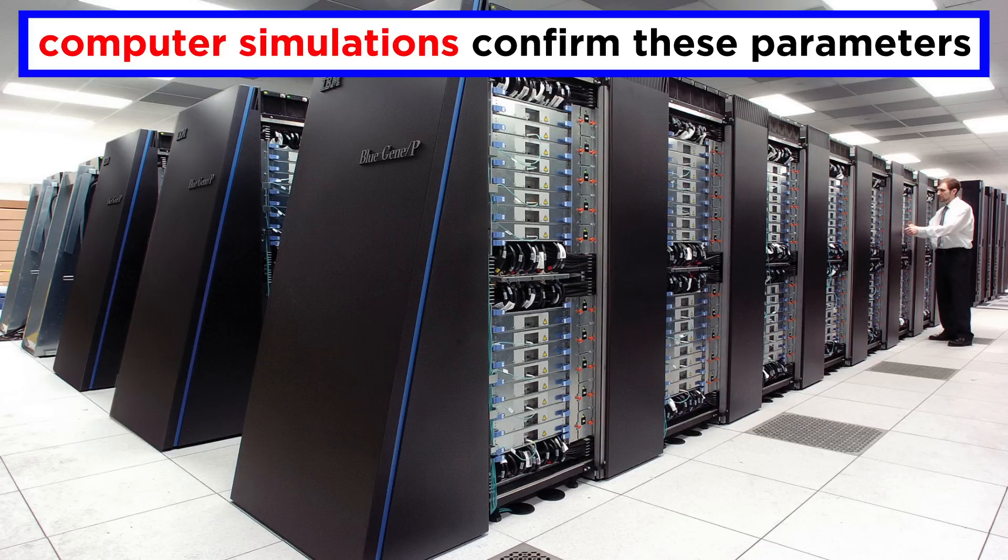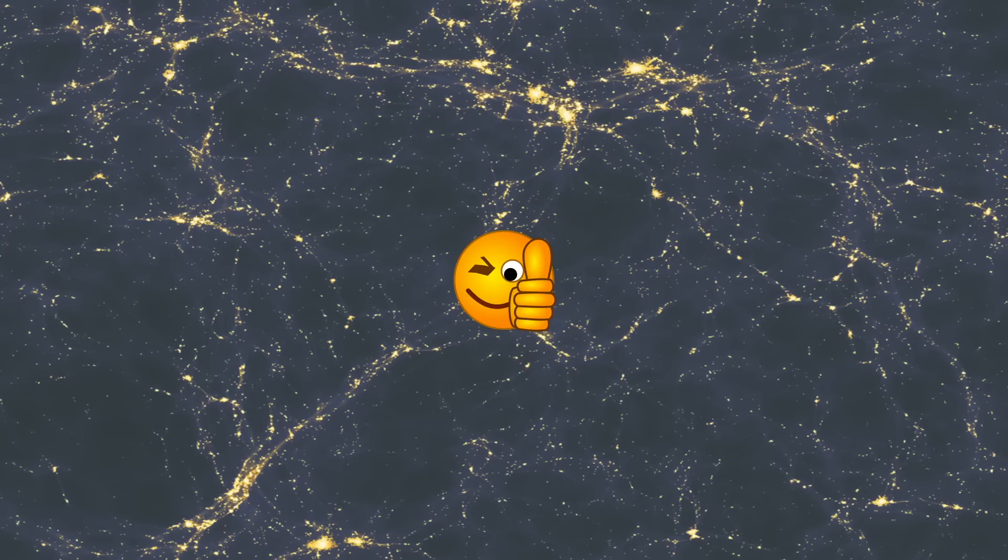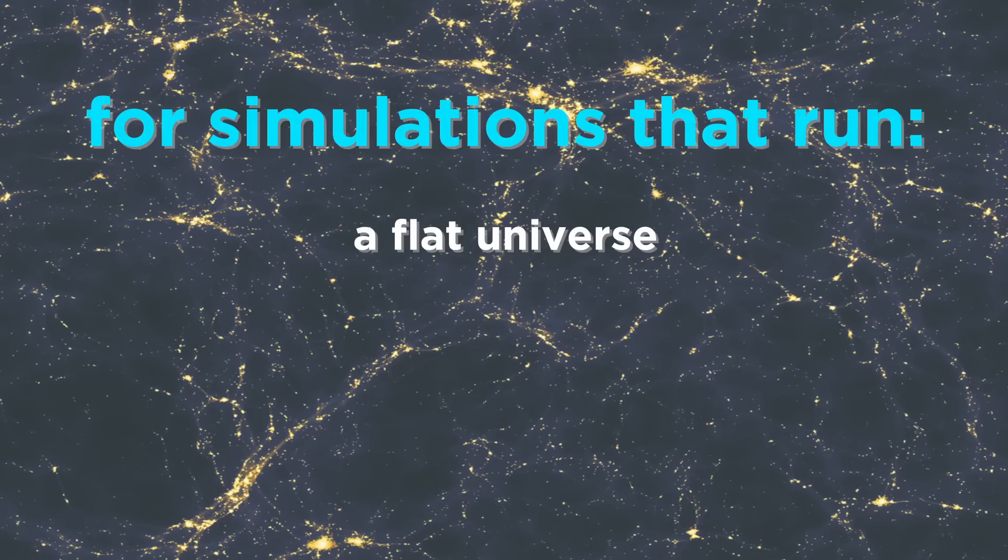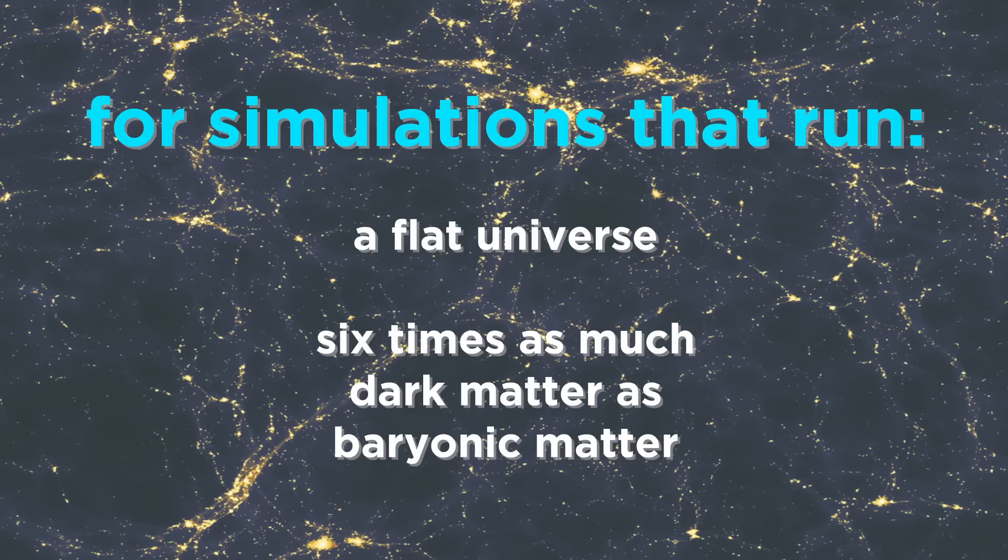Computer simulations actually confirm this conception of the geometry and behavior of the universe. When a cluster of powerful computers simulate what we believe to be the conditions of the early universe and let things expand to present day, we do get a structure of filaments that resembles what we see with our telescopes, but only if we consider a flat universe, with about six times as much dark matter as baryonic matter.